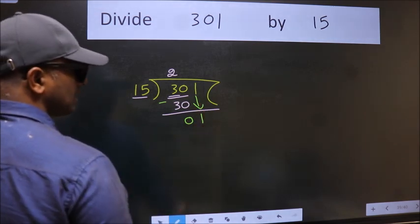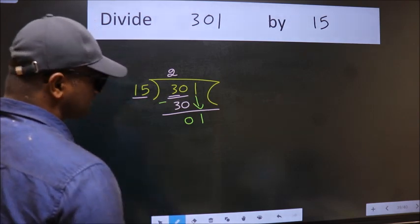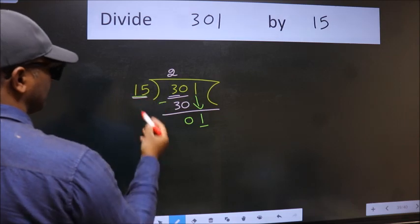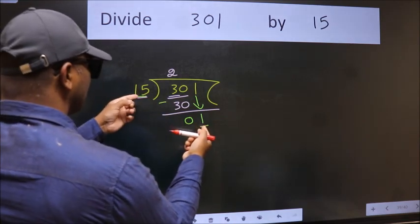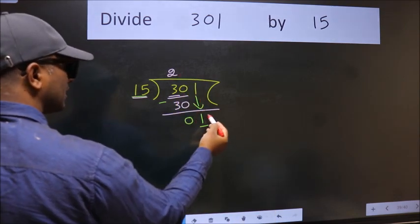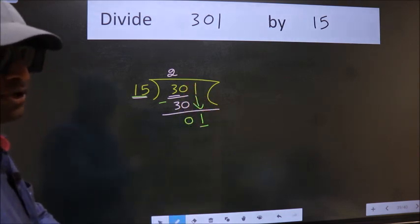After this step, the mistake happens, and the mistake is this: Here we have 1. Here 15. 1 is smaller than 15. So what many do is they directly put a dot and take 0, which is wrong.